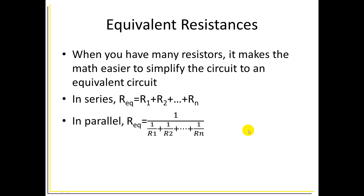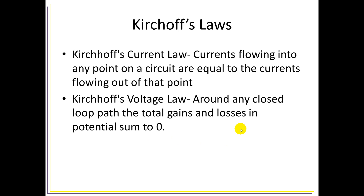Sometimes if you have a complicated circuit, it's nice to find an equivalent resistance, which allows us to simplify our circuit. We can look at elements collectively by finding one resistance equivalent to several. If you have resistors in series, you find the equivalent by simply summing all of those resistances. If you have resistors in parallel, you find the equivalent using a reciprocal relationship: REQ equals 1 over the sum of the reciprocals of each individual resistance.